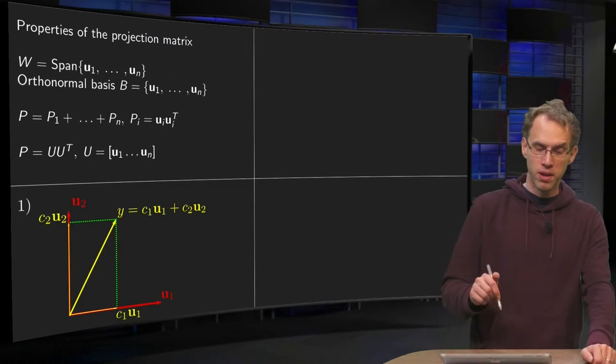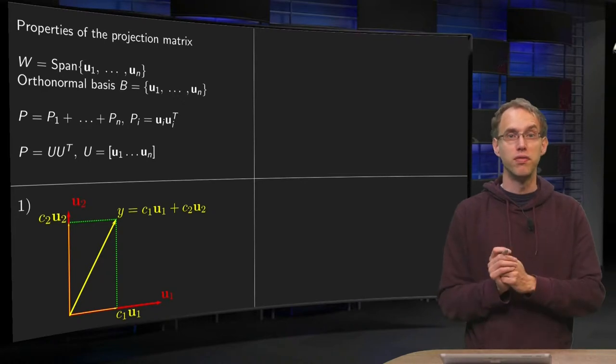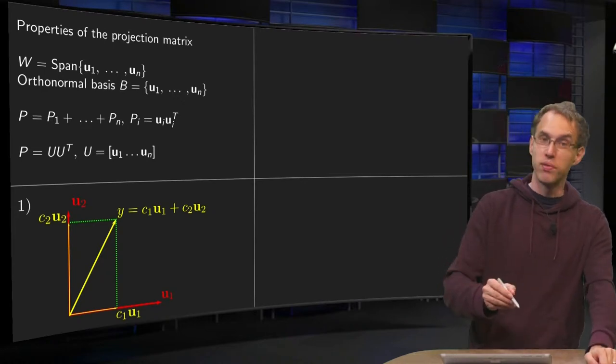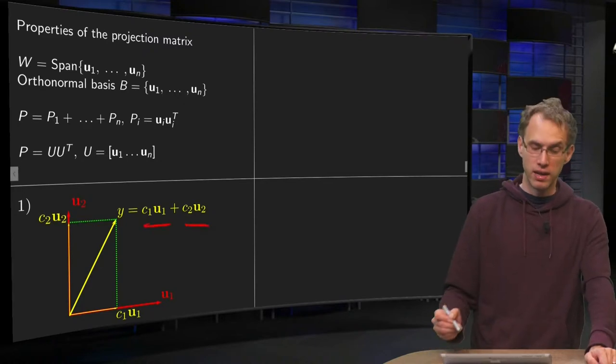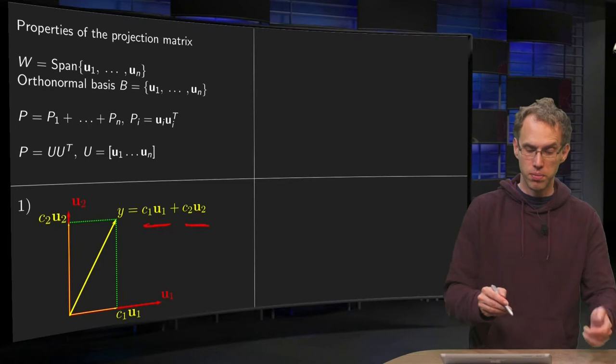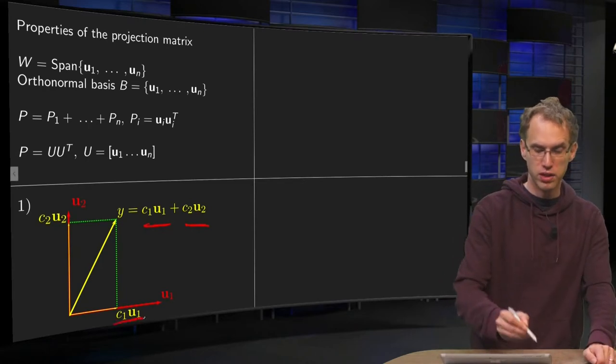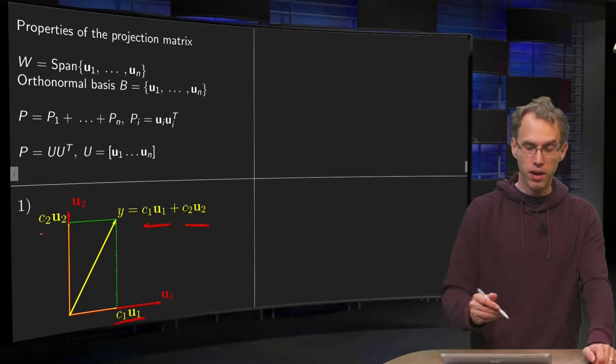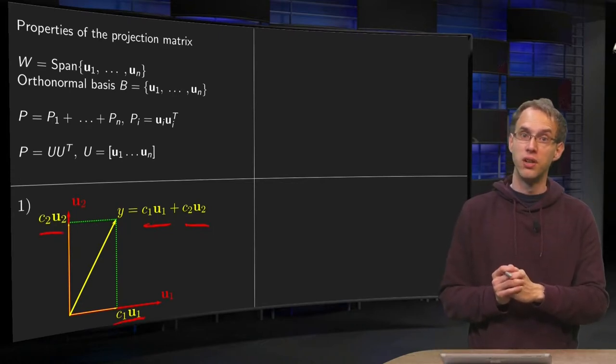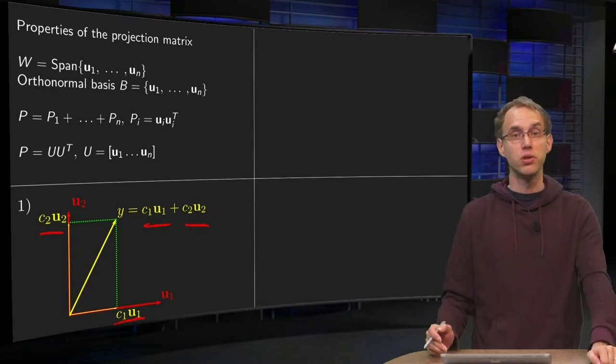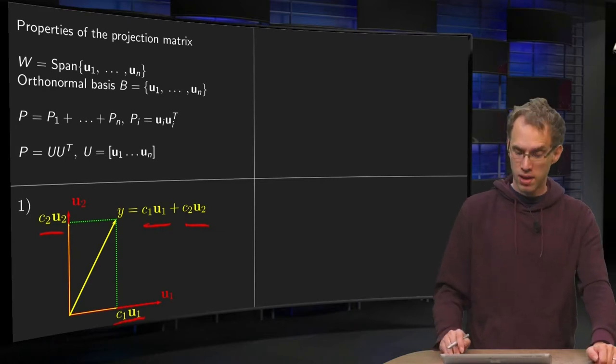Let's do it with only U1 and U2 to make the figure a bit easier. Then we can write our Y as a linear combination of U1 and U2. That means Y is a combination of C1U1 over here and C2U2 over here, where C1U1 is the orthogonal projection of Y on U1, and C2 times U2 is the orthogonal projection of Y onto U2.